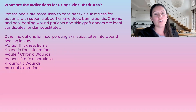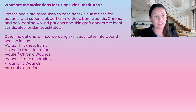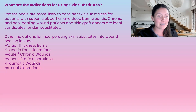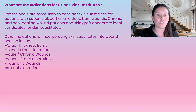What are the indications for using skin substitutes? They are normally considered when a patient has superficial, partial, or deep burn wounds that are chronic or non-healing. Other indications include partial thickness burns, diabetic foot ulcerations, acute or chronic wounds, venous stasis ulcerations, traumatic wounds, and arterial ulcerations. Really, any time we have wounds that are chronic or non-healing, that is when we start considering skin substitutes.